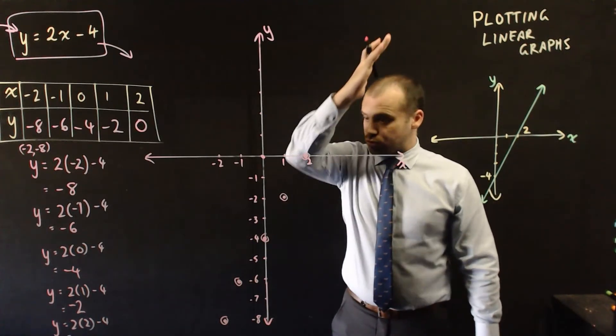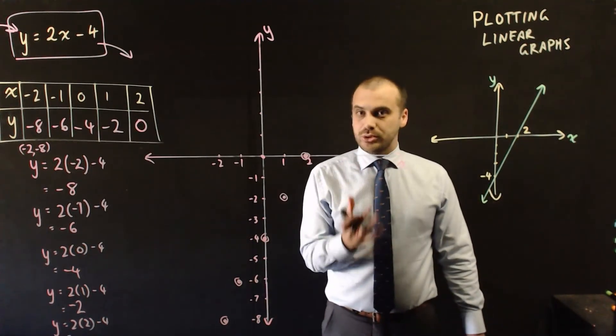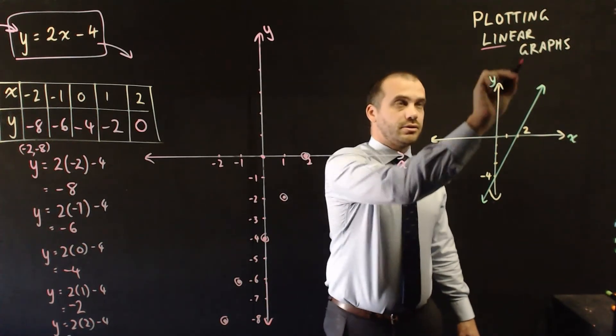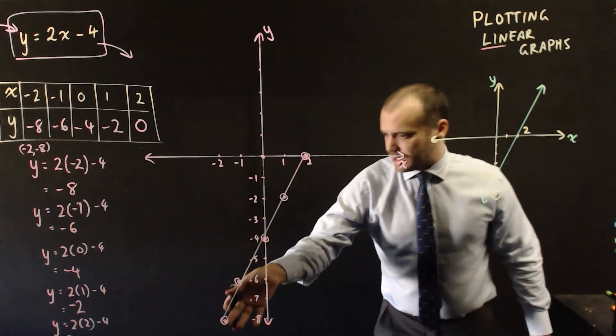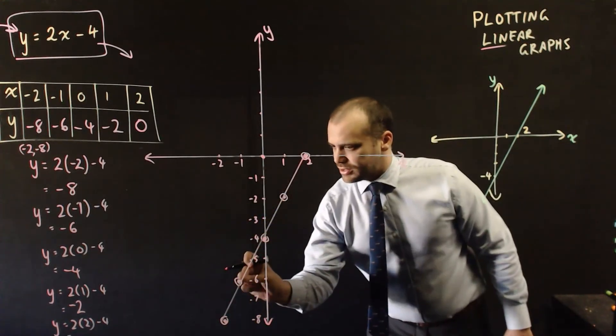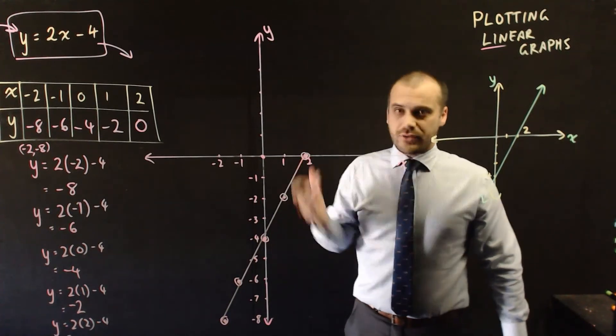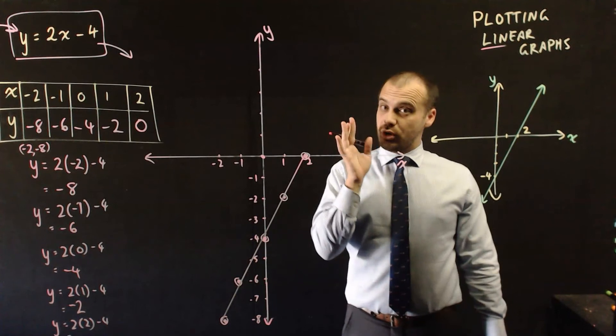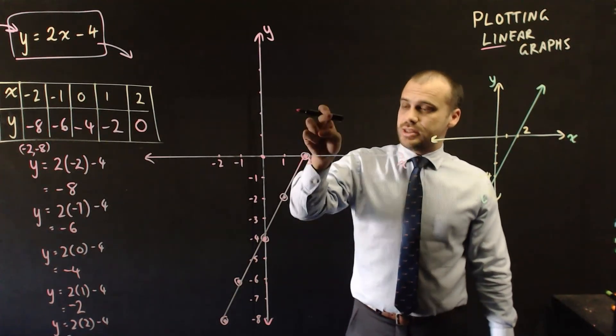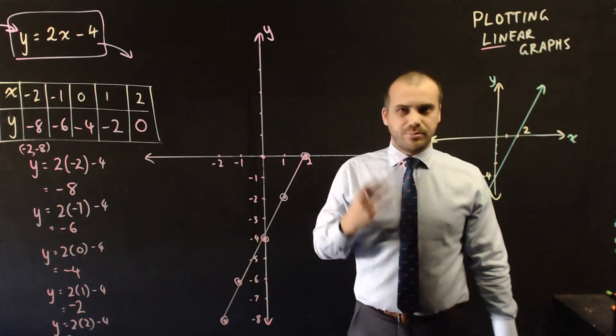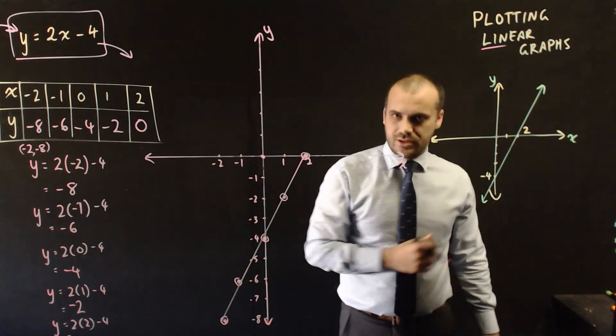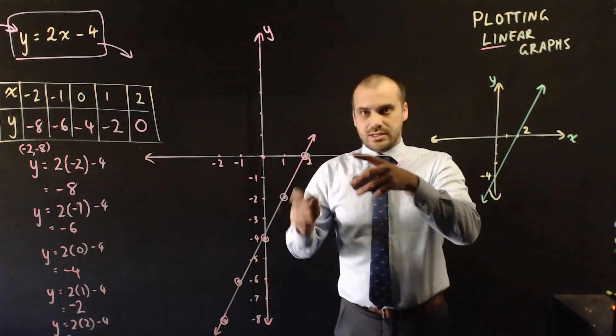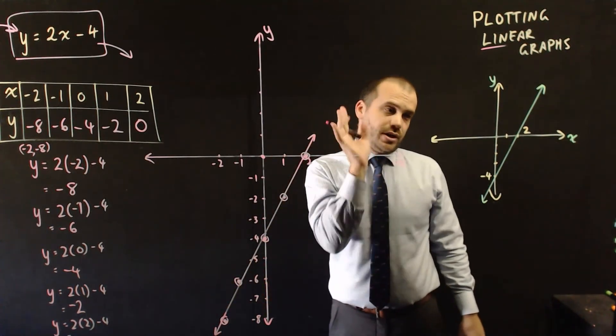Final step is to draw a line through these. It should be a straight line because this is a linear graph. Linear, line, straight line. Now lines go on forever, which means we should extend this a little bit and put 2 arrows on the end. That is a linear graph. These two arrows tell us it will go on forever and ever and ever.